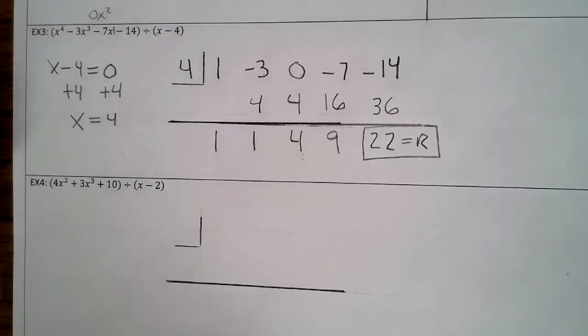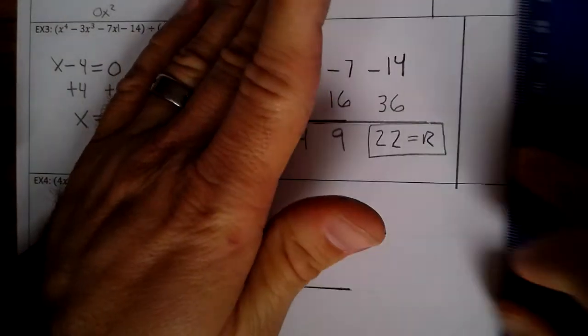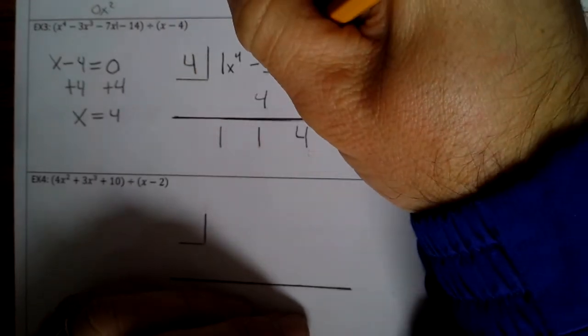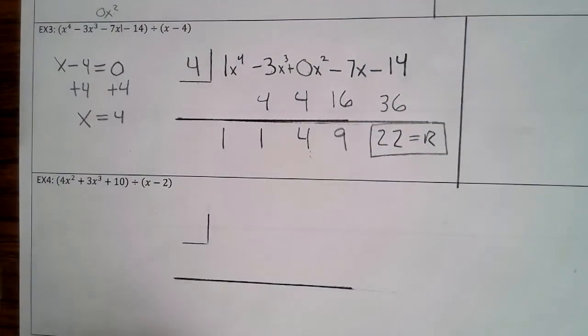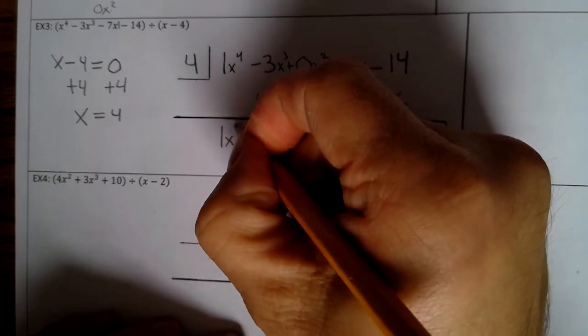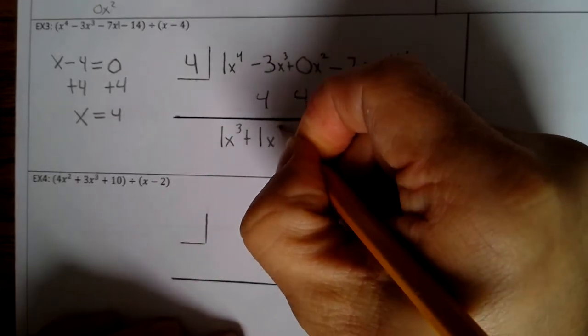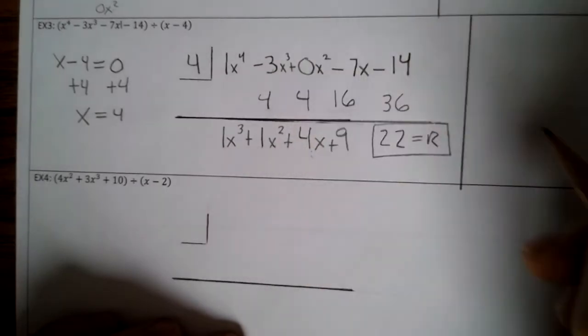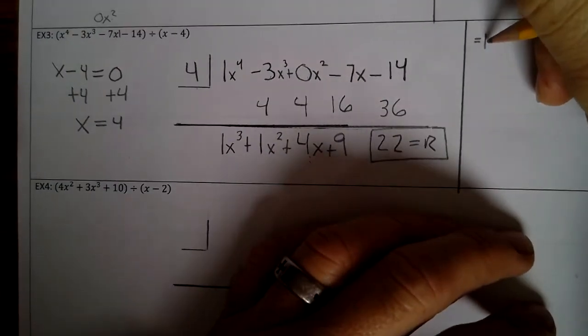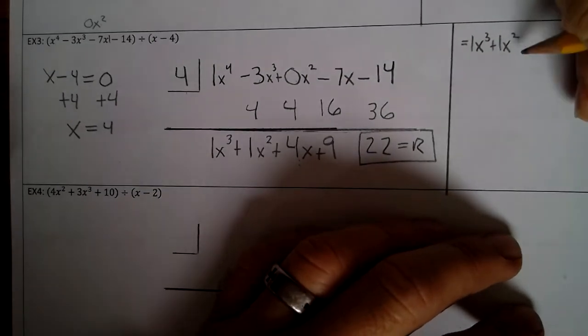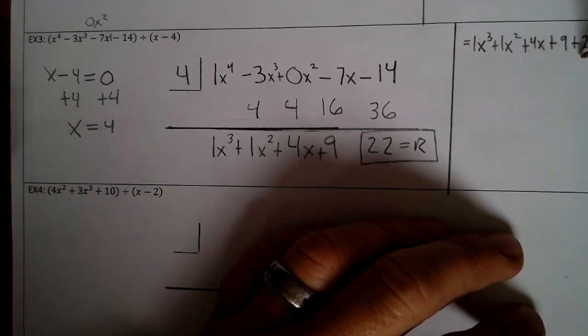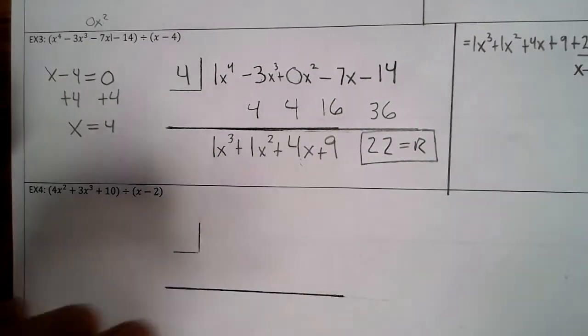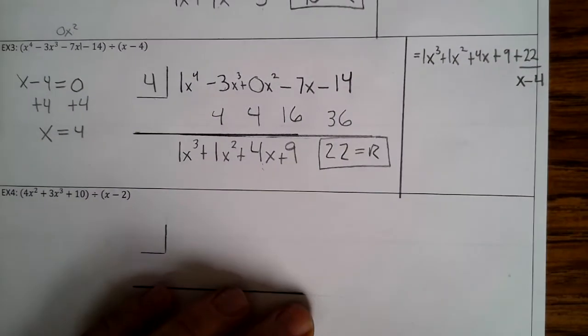So this was 1x⁴ - 3x³ + 0x² - 7x - 14. Divide the exponents decrease by 1. So that's 1x³ + 1x² + 4x + 9 plus 22 divided by x - 4. And I don't know why the page keeps getting cut off, but there you go.